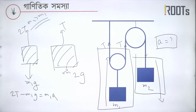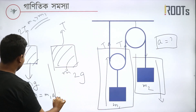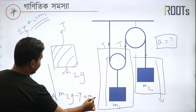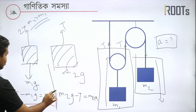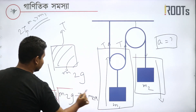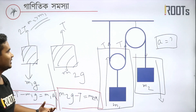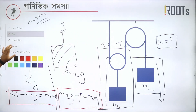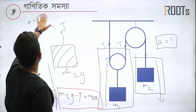2T minus M1G is equal to M1A. Similarly, M2G minus T is equal to M1A. We have two equations. We have to make a path, we have to solve. That is the same — we have to make this play, which means we both will make the play and use it.